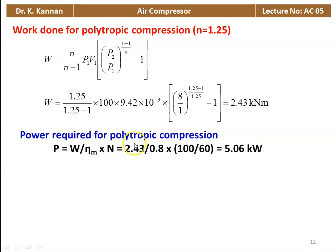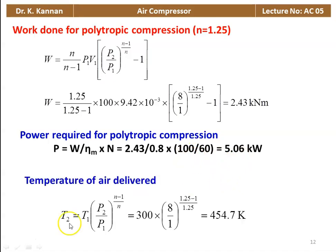Power required = W / (mechanical efficiency) × speed = (2.43 / 0.8) × (100/60) = 5.06 kW. Temperature of air delivered for polytropic compression: T2 = T1 × (P2/P1)^((n-1)/n) = 300 × (8/1)^(0.25/1.25) = 454.7 K.